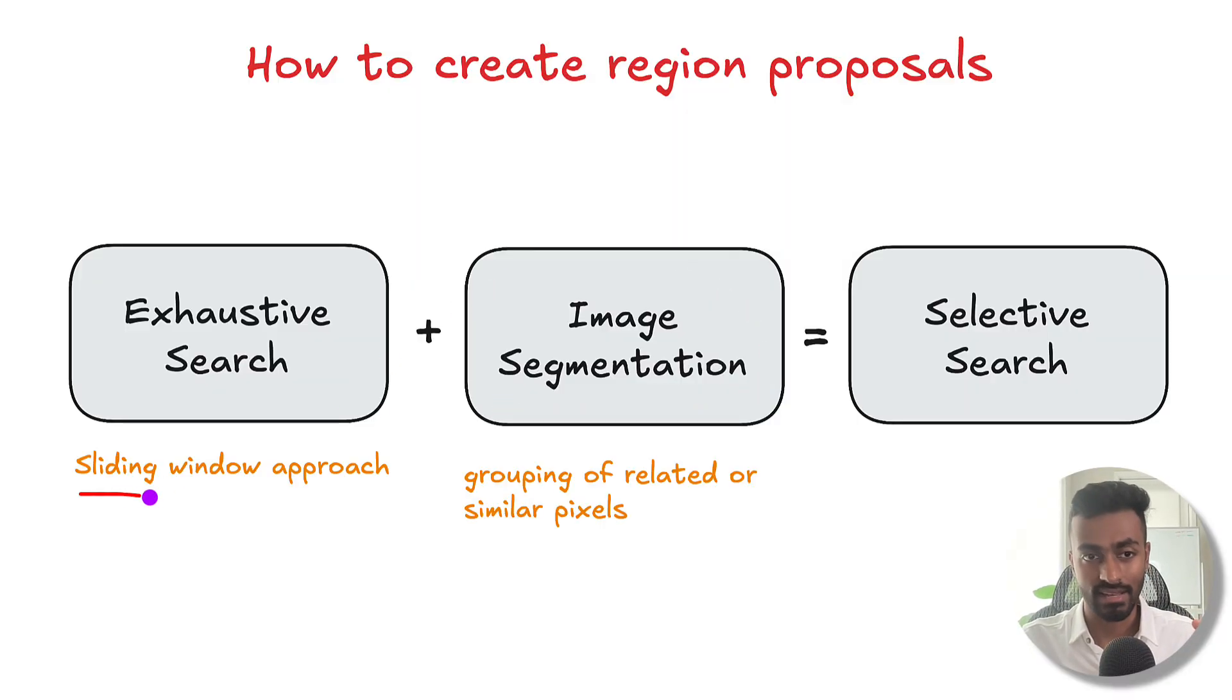So exhaustive search, by the way, is like a sliding window approach, and image segmentation is the grouping of related or similar pixels together. Now, let's take a look at the algorithm for selective search for creating region proposals.